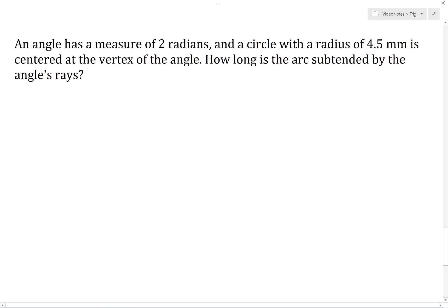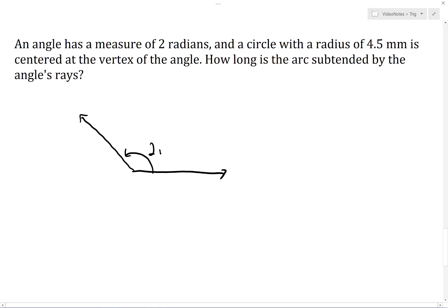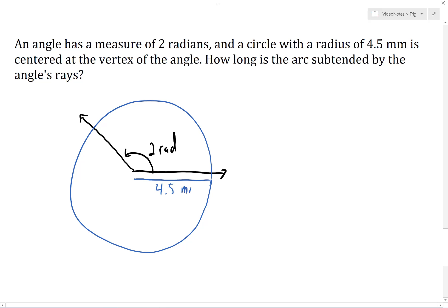Now suppose an angle has a measure of 2 radians, and a circle with a radius of 4.5 millimeters is centered at the vertex of the angle, and we want to know how long the arc subtended by the angle's rays is. We draw a diagram: the angle sweeps out 2 radians with the initial ray at 3 o'clock, and we have a circle with a radius of 4.5 millimeters centered at the vertex. Since this angle has a measure of 2 radians, the subtended arc is 2 times as long as the radius of 4.5 millimeters, so the subtended arc has a length of 9 millimeters.